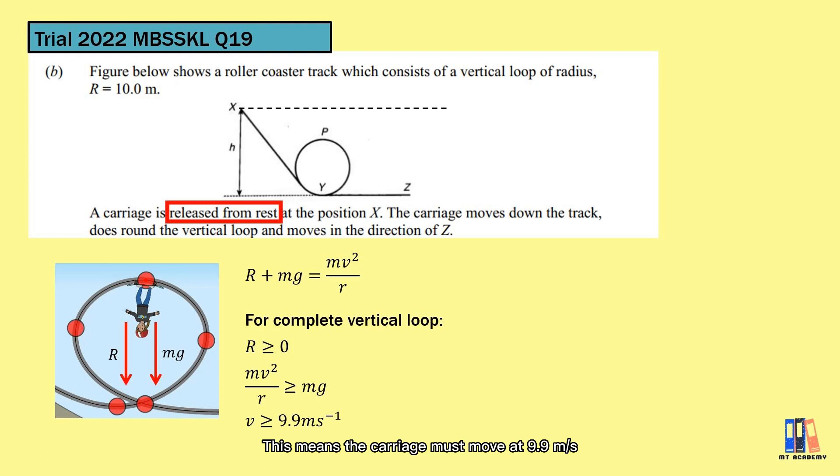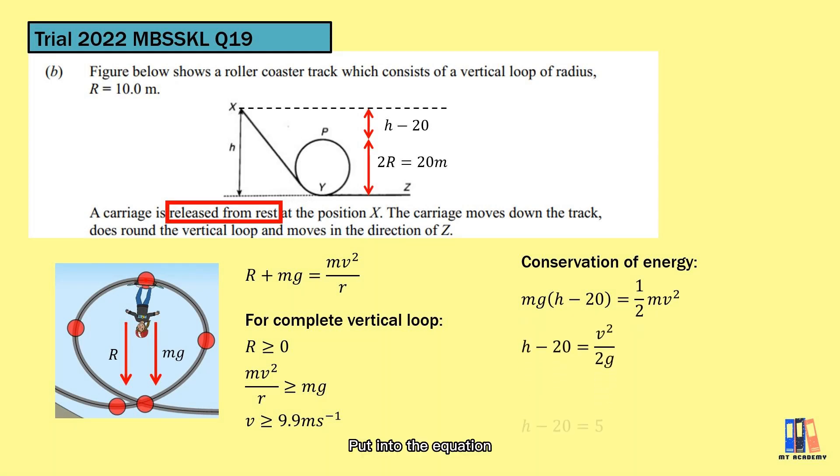This means the carriage must move at 9.9 meters per second when it is at position P. The velocity is obtained from the conversion of potential energy like the second example in this video. We can just consider the positions at X and P. The difference in height can be expressed as h minus 20 meters. Put into the equation, we can calculate the difference in height equals 5 meters, so the total height h equals 25 meters in this case.